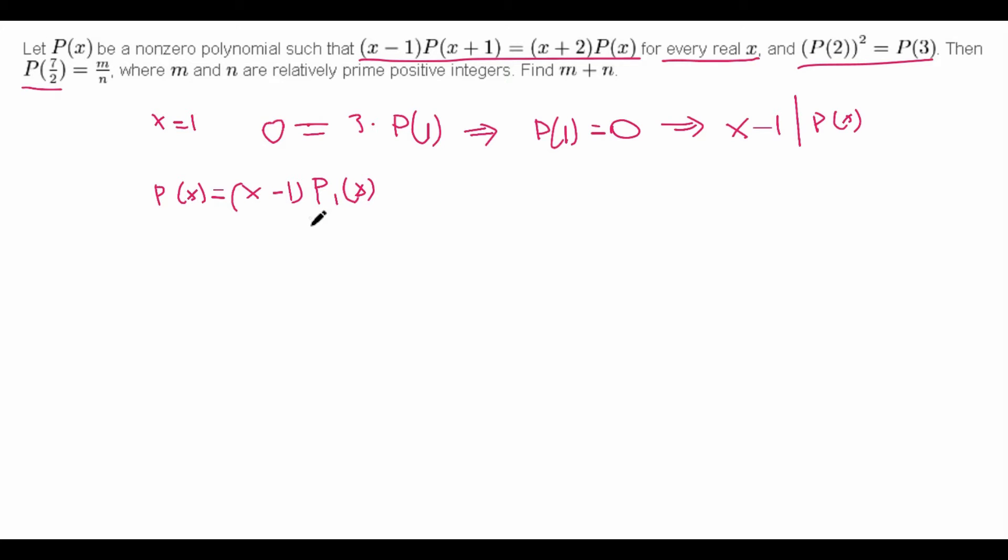So now that we have this x-1 factor already counted for, we can just plug this back in to get (x-1) times P(x+1) equals x times P₁(x+1). And then on the other side, we have (x+2) times (x-1) times P₁(x). Now we note that the x-1's cancel out, so we are left with x times P₁(x+1) equals (x+2) times P₁(x). And this is suspiciously similar to the first equation that we have, except instead of x-1, it's replaced with x. So this motivates us to make another substitution.